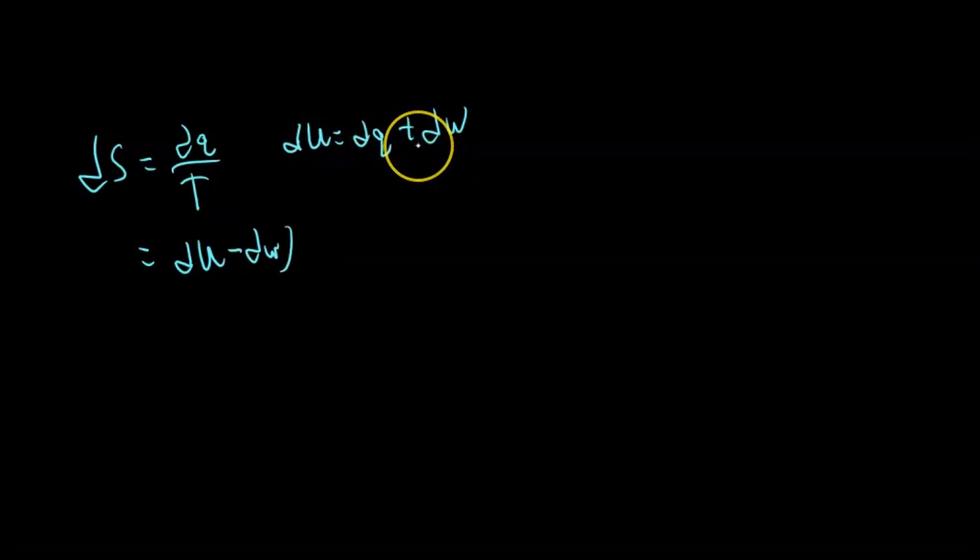We have the thermodynamic definition of entropy equals dq over T. If we use the first law, du equals dq plus dw, and we substitute that in for dq. So dq is equal to du minus dw. See what I did? I just solved for dq from the first law and plugged it in here.